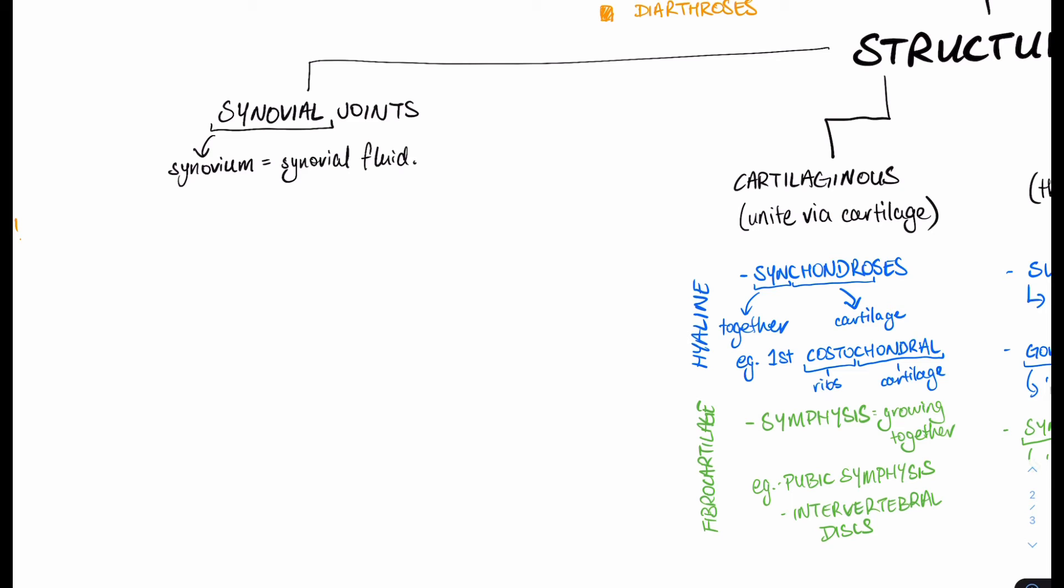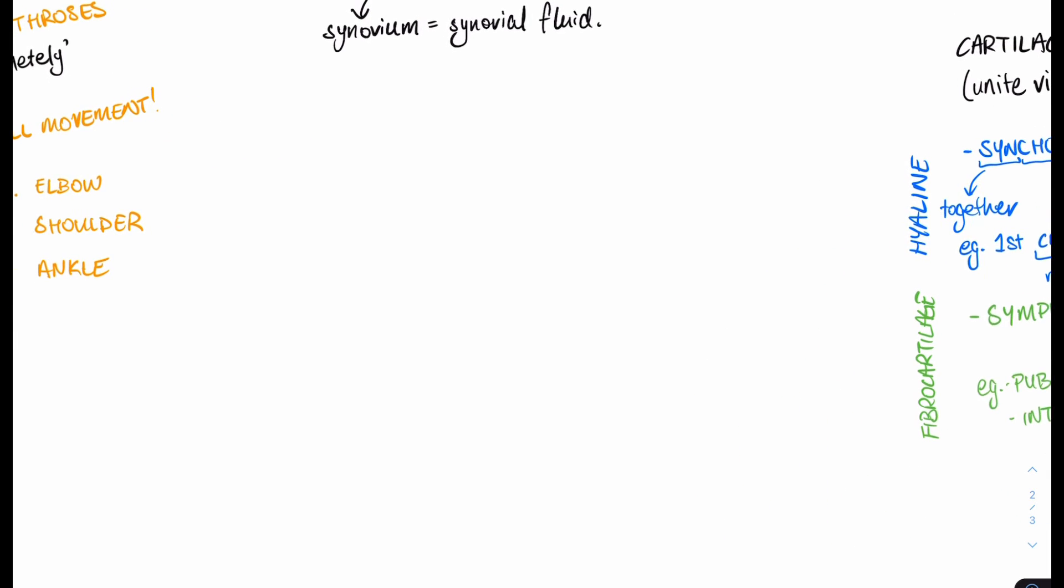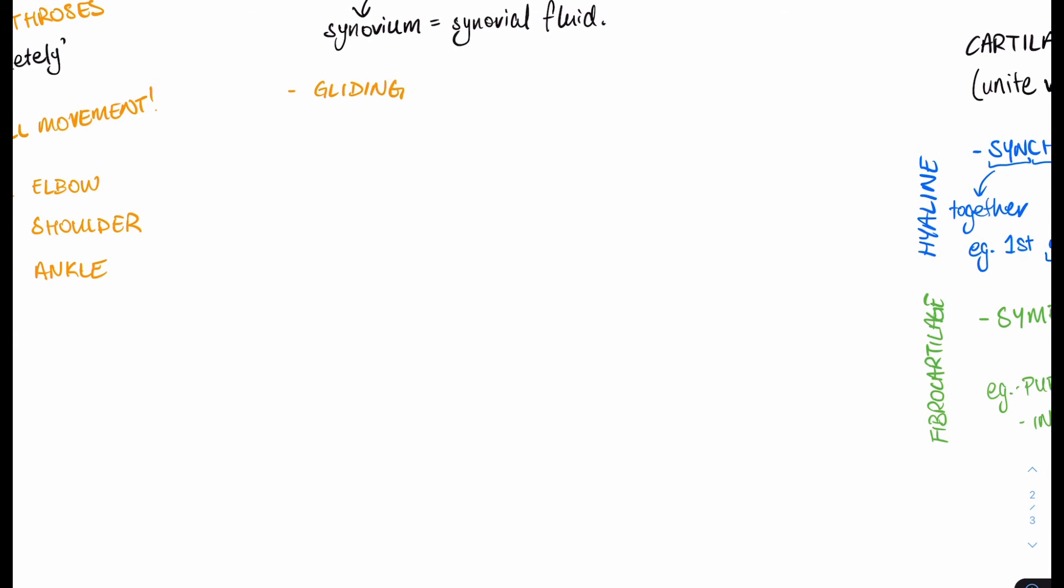And our last type of structural classification for joints are our synovial joints. Synovial referring to the synovial fluid. All synovial joints will be encapsulated, within which that capsule, the synovial fluid will flow, and also the heads of the bones will typically have articular cartilages as well. Okay, so there are six main types of synovial joints. Let's go through them quickly.